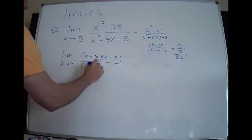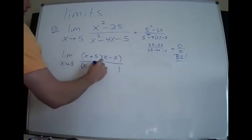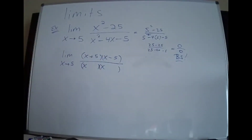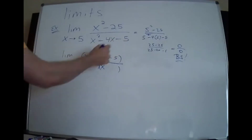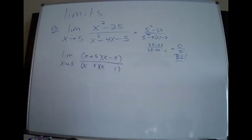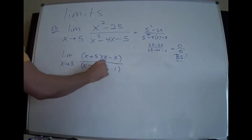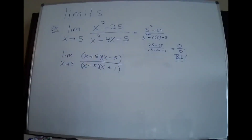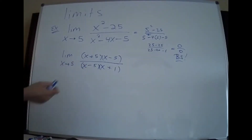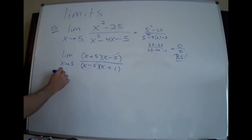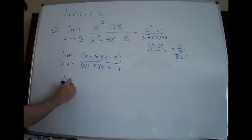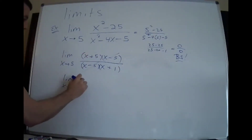So I'm going to factor the bottom. I need two numbers whose product is 5 — there are only two numbers whose product is 5, and you just have to make sure you get your signs right. The bigger number has to carry the correct sign. Now I'm going to cross out the x minus 5. Remember, you've got to write 'lim' until you plug in. As annoying as it might seem, you haven't computed the limit yet.